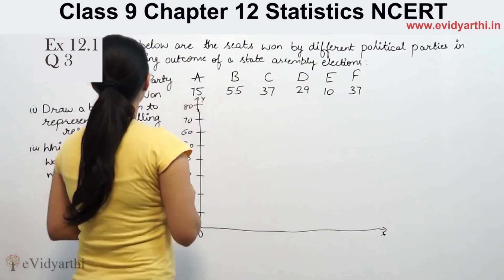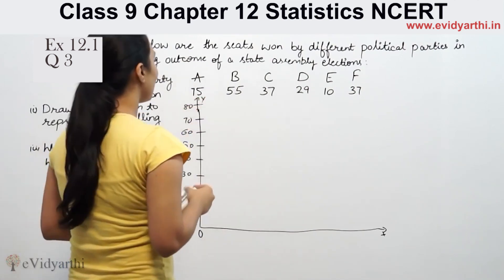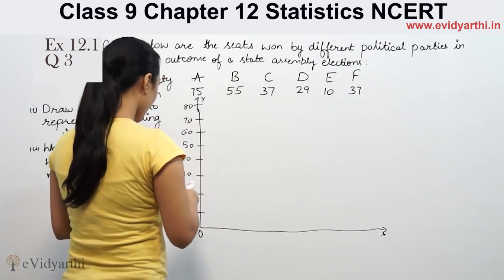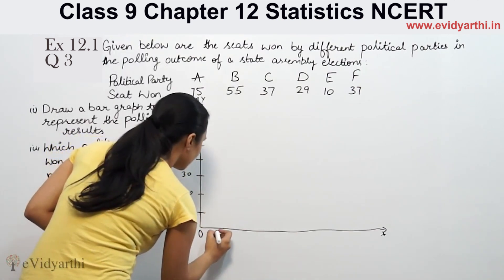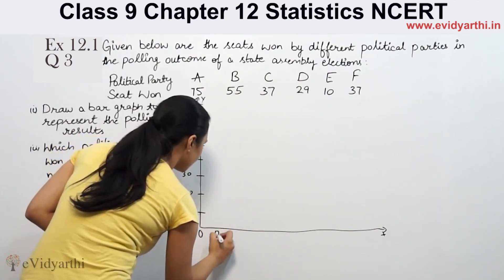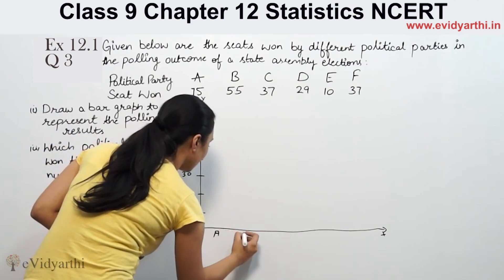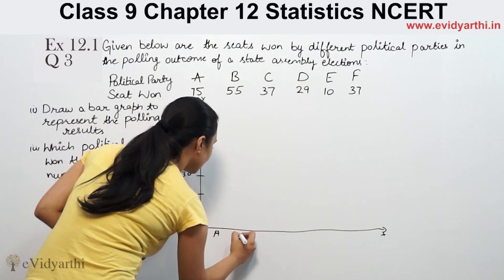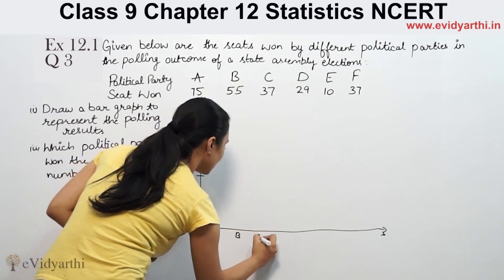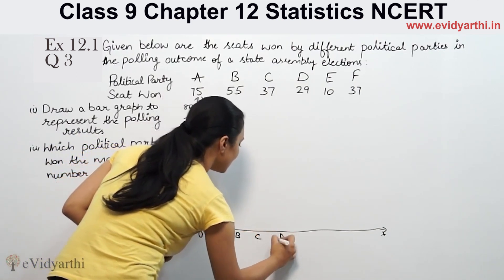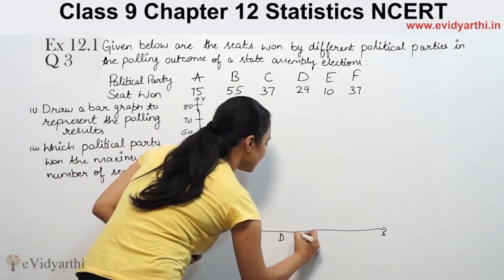So we have to represent parties A, B, C, D, E, and this is 6 parties. This is A, this is B, this is C, this is D, E, and L on the x-axis.